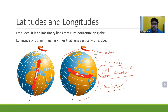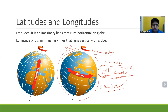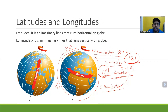The equator is the largest latitudinal line. How many latitudinal lines are on the globe? From 0 to 90 degrees north and 0 to 90 degrees south, the total is 180, plus the equator equals 181. So there are 181 latitudinal lines in total: 90 in the northern hemisphere, 90 in the southern hemisphere, and 1 is the equator.